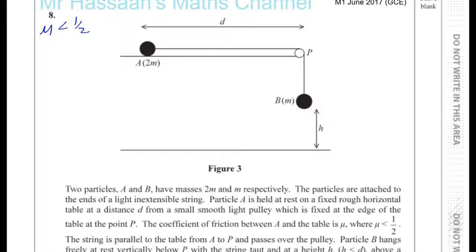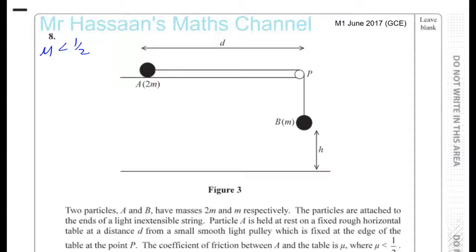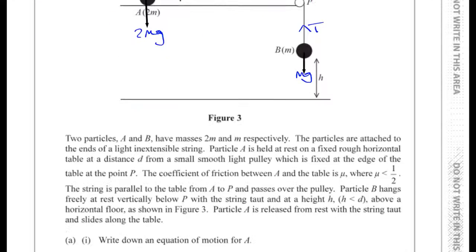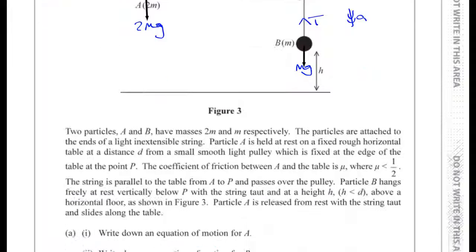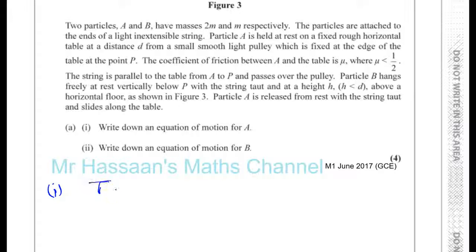Write down the equation of motion for A. So let's put in all the forces we have here. You have the reaction force, you have the weight 2mg, and the reaction force will be equal to 2mg. Here you've got the weight mg. You have the tension in the string, and friction acting opposing the motion — friction is acting in this direction, and it's reached its maximum value because it's moving. So for A, we can say T minus Fmax equals 2mA.